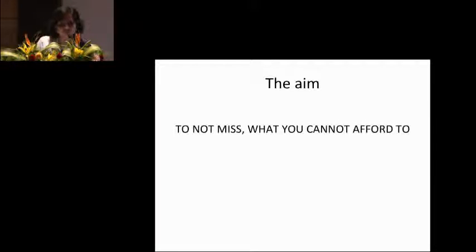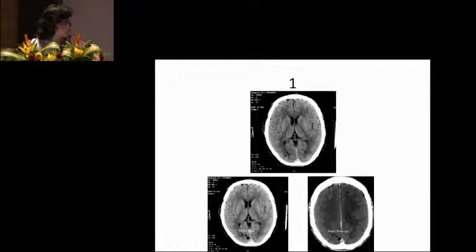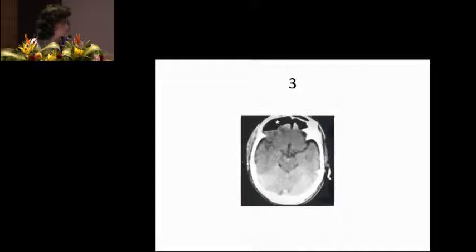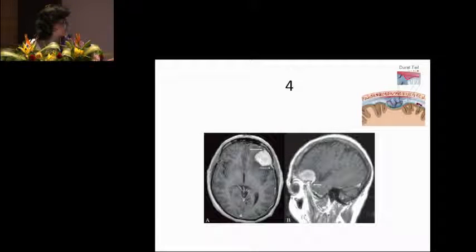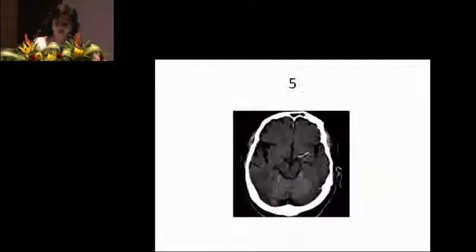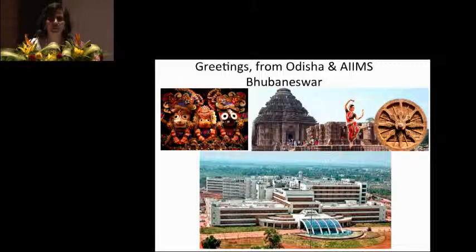The aim of this talk was to not miss what you cannot afford to miss. Some typical CT scan findings shown include: a delta sign positive due to blockage of the cerebral venous system, an acute-on-chronic subdural hematoma, pneumocephalus — the Mount Fuji sign — post-operative. And finally, the quiz answer: this is a meningioma because you see the dural tail sign and it's brightly enhancing on CT. The hyperdense artery sign is seen in infarction. Greetings from Orissa — that's where I work. Thank you.